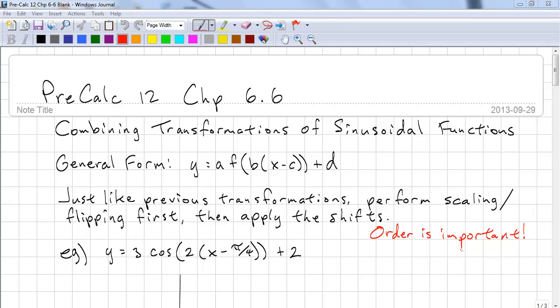The general form is y equals a times f of b of x minus c plus d. Just like our previous transformations, we always perform the scaling and flipping first, then we apply the shifts. This is because order is important.